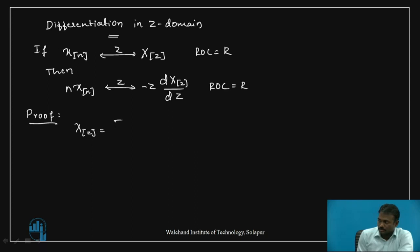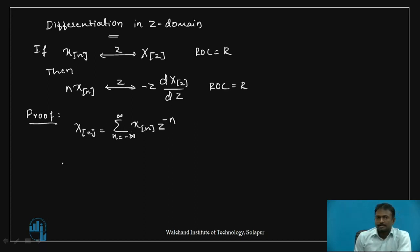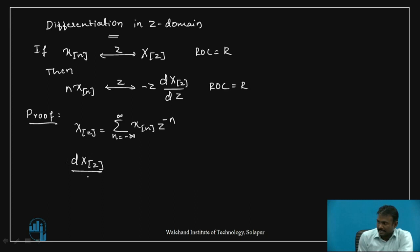Let us prove this. We know that X of Z is equal to summation N equal to minus infinity to infinity, X of N into Z to the power minus N. Now differentiate both the left-hand side and right-hand side by Z. Therefore, dX of Z by dZ is equal to differentiation of summation N equal to minus infinity to infinity, X of N into Z to the power minus N.